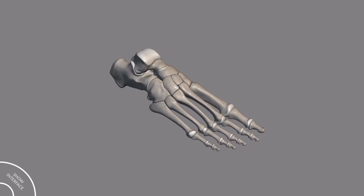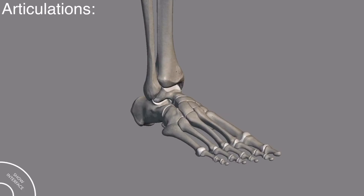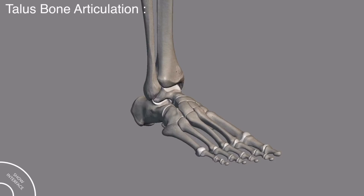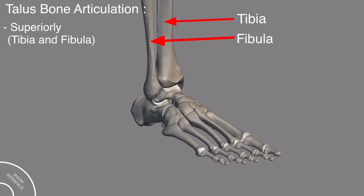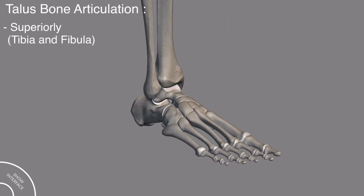Now let's come to the joints and articulations of these bones. In this model, you can clearly see the tibia and the fibula bone. The talus bone articulates superiorly with the tibia and fibula. The tibia and the fibula articulate only with the talus bone of the ankle. Now we will remove the tibia and the fibula to have a better look at the bones of the ankle.